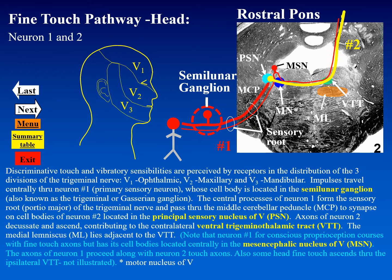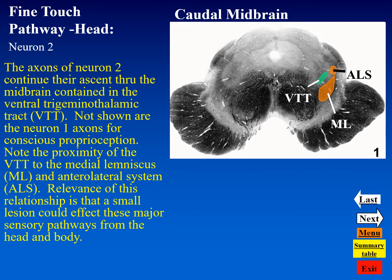Regarding this pathway, some fine touch information and probably some proprioceptive information will ascend in the ipsilateral ventral trigeminothalamic tract. Therefore, a unilateral lesion of the ventral trigeminothalamic tract would probably not result in total loss of fine touch or proprioceptive sensibility on the contralateral side. The ventral trigeminal tract is very close to the medial lemniscus and the anterior lateral system, so a lesion in this area usually impacts all three tracts.